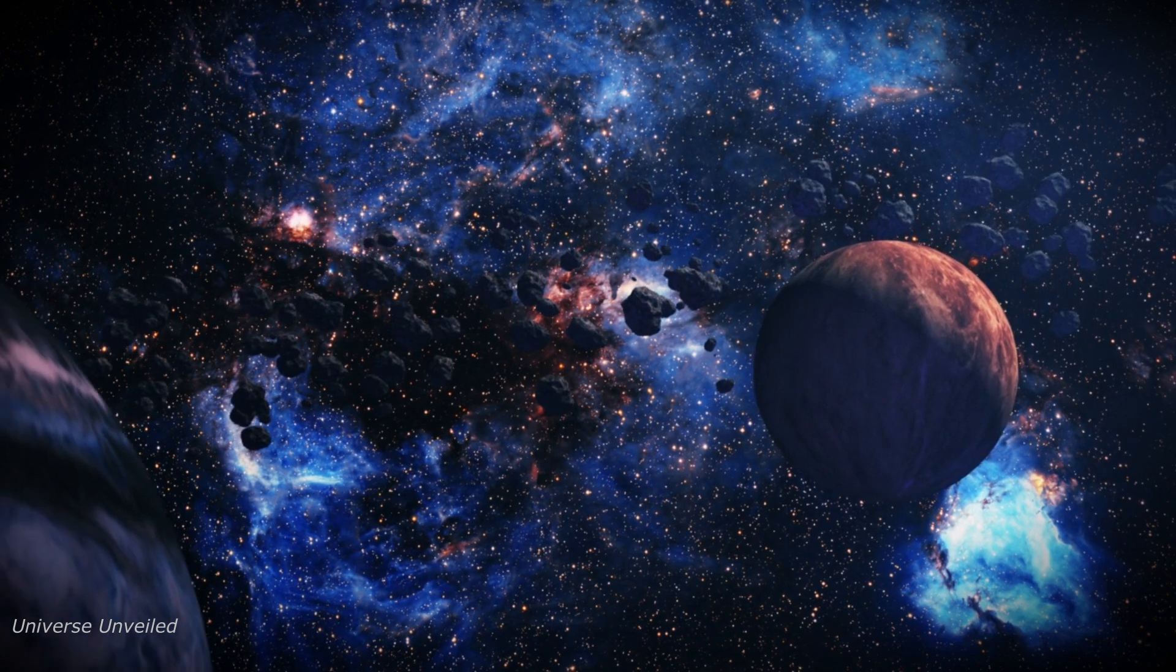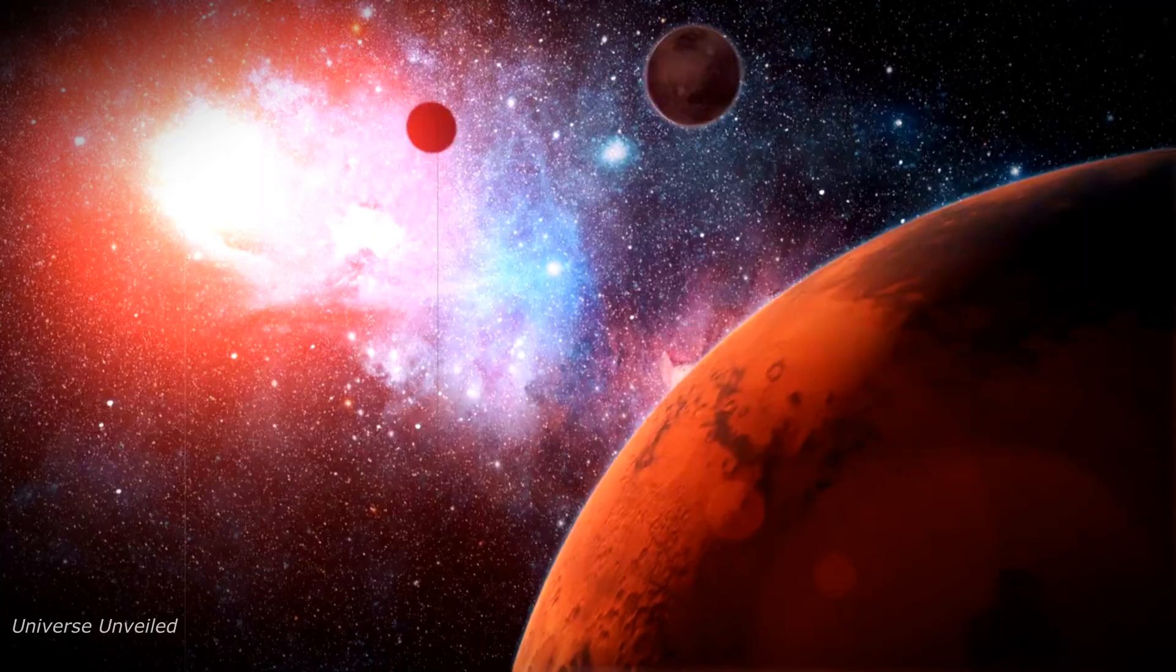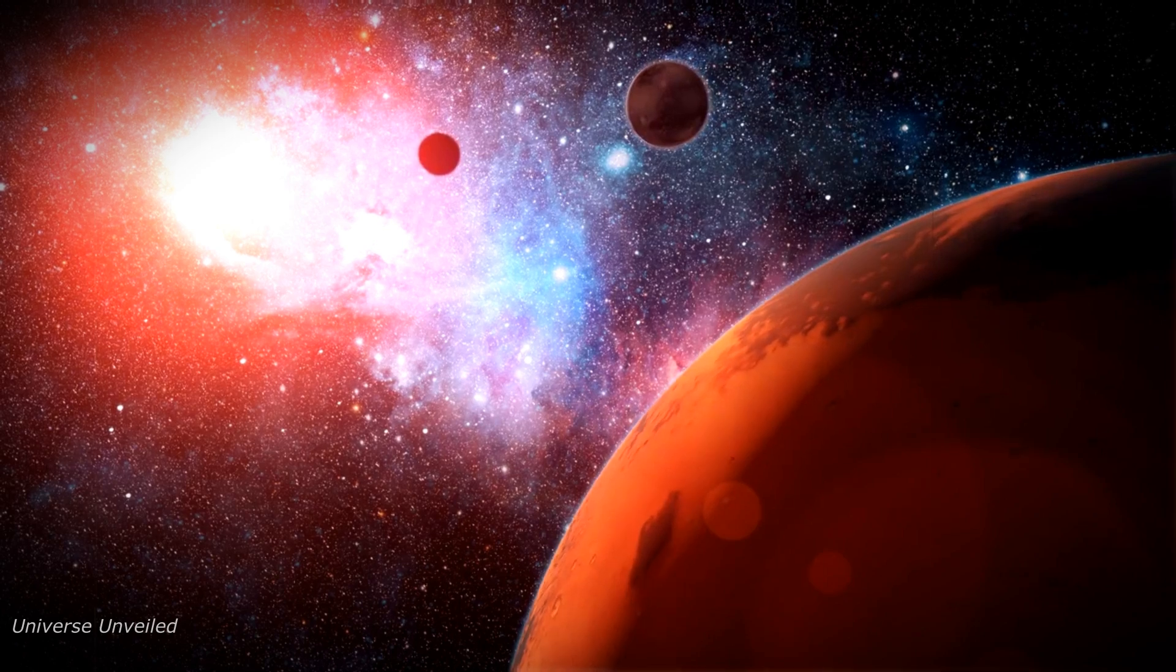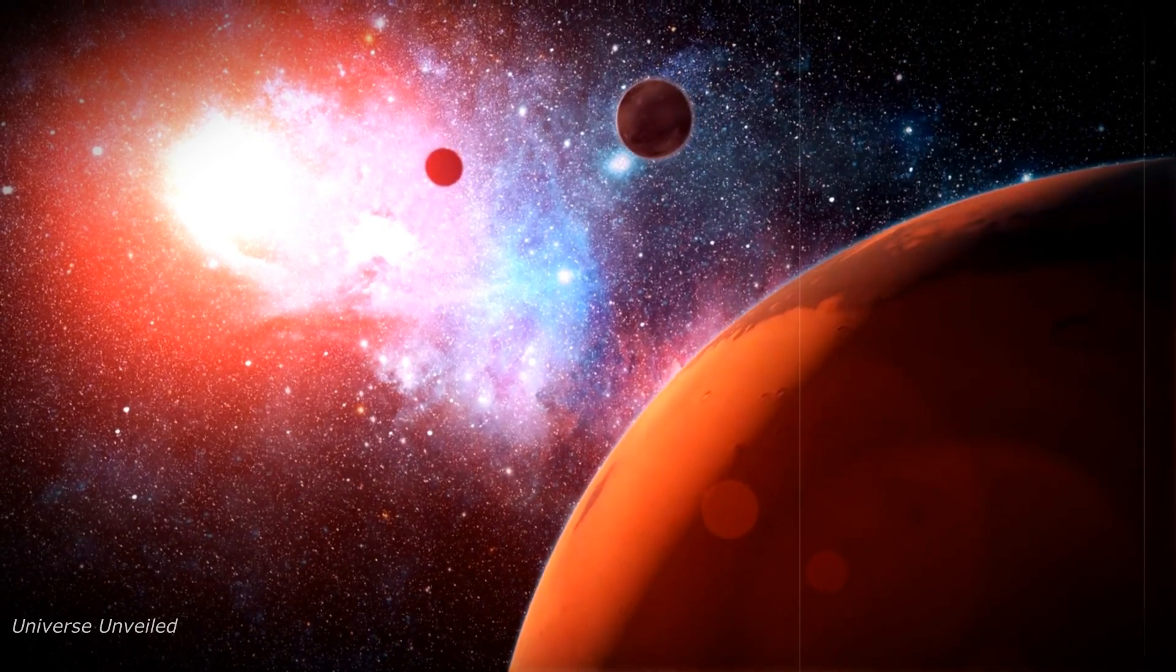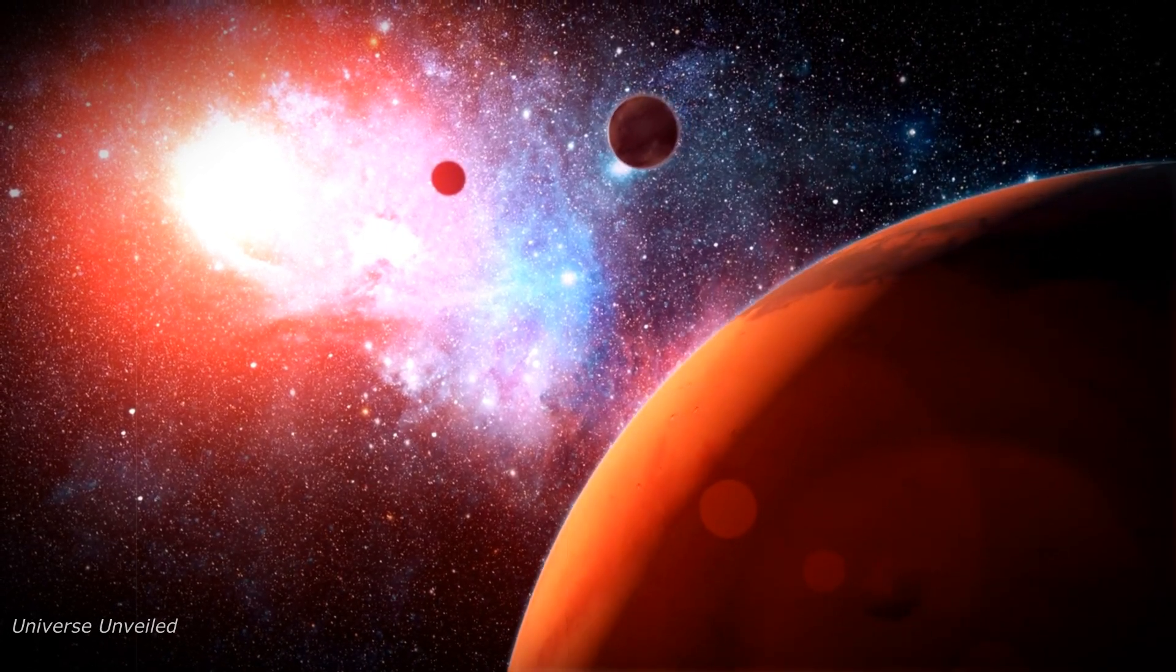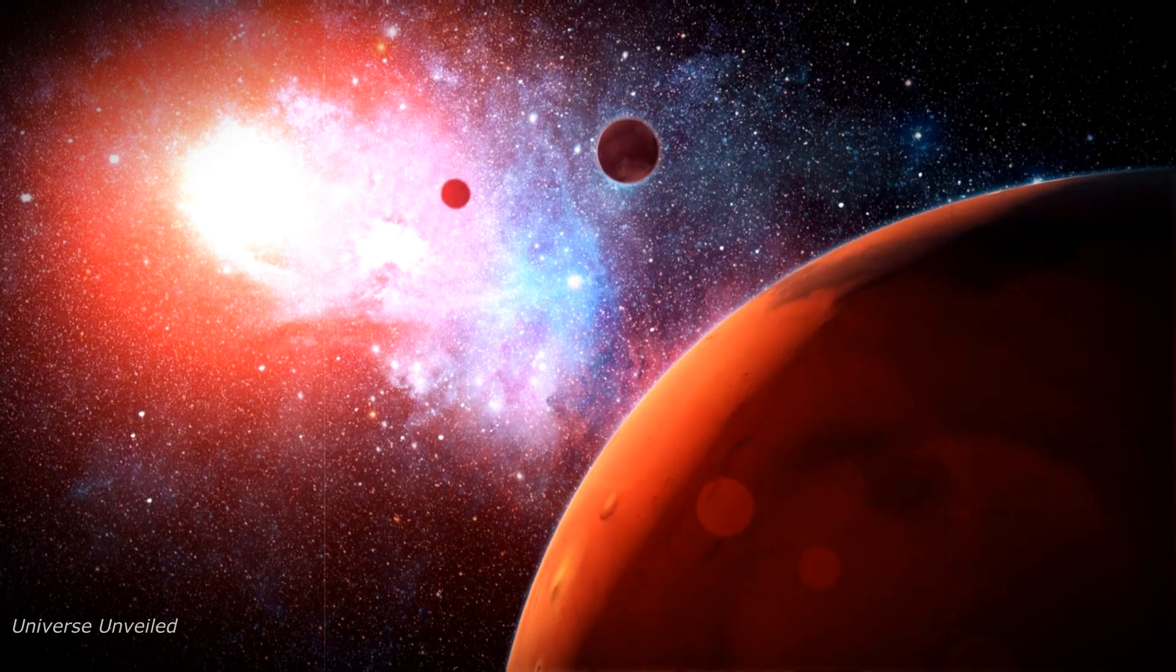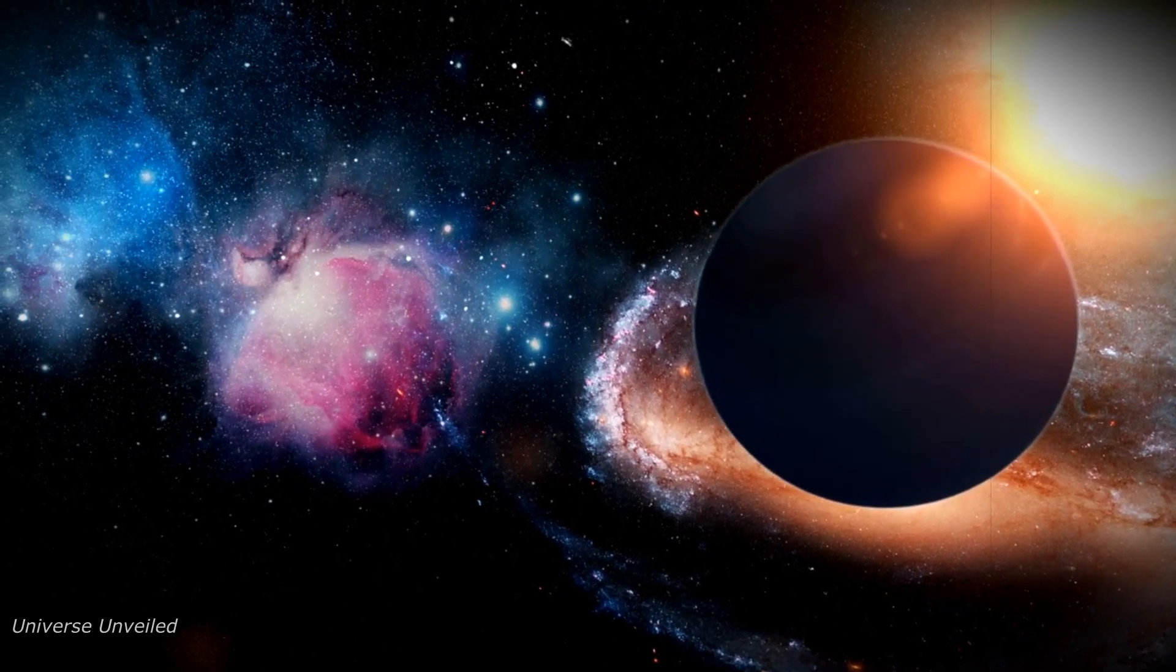Here's why this discovery is such a big deal. It's not just a minor tweak to our understanding of the cosmos—it fundamentally challenges the way we think about planet formation. Planets, as we understand them, form from the leftover material after a star is born. This leftover material, known as a protoplanetary disk, contains gas, dust, and other elements that gradually come together. A swirling disk of gas and dust clumps together over millions of years, eventually forming planets.